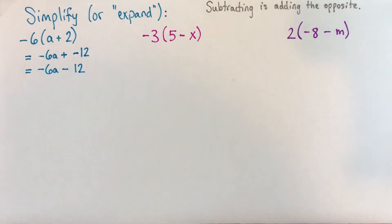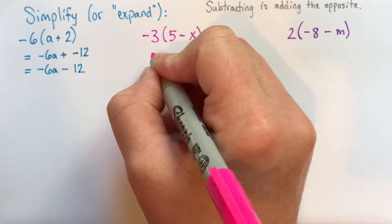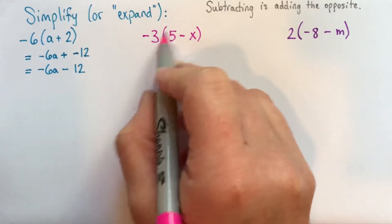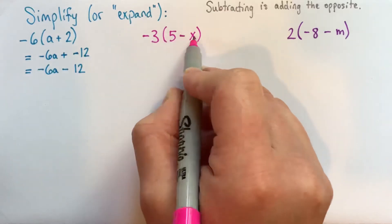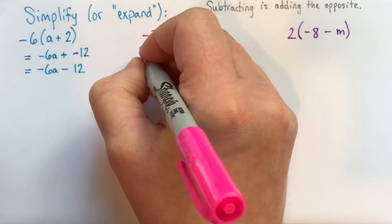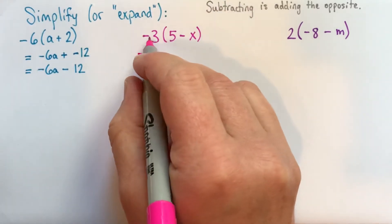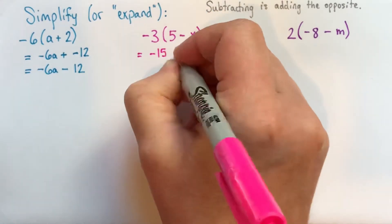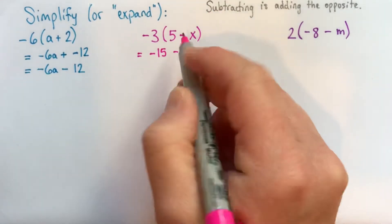Alright, the next couple questions I'm going to do twice. I'd like to show you that they're the same. I'd like you to choose the method that looks better for you. I don't think this is a case where you really need to be able to do both methods. In fact, if you can do sort of a shorter way, that's great. So, we've got negative 3, and we're multiplying negative 3 by 5 subtracted x. So, the first way here, we can say that that's negative 3 times 5 is negative 15. And then we're subtracting, because it's subtraction, negative 3 times x, which is negative 3x.